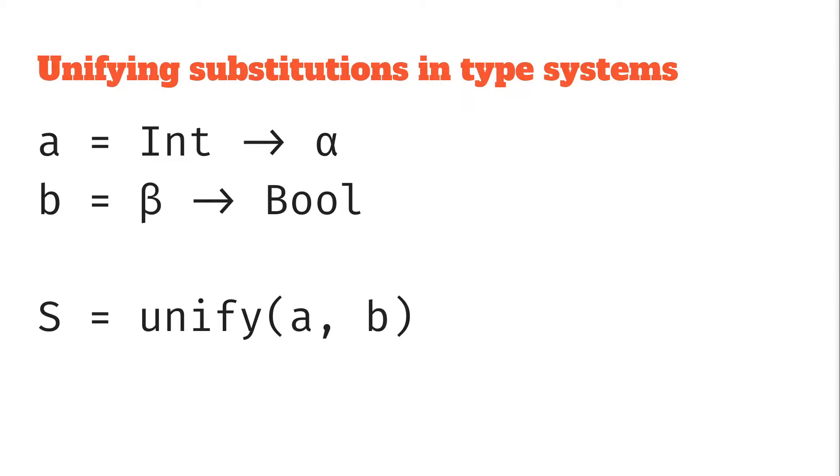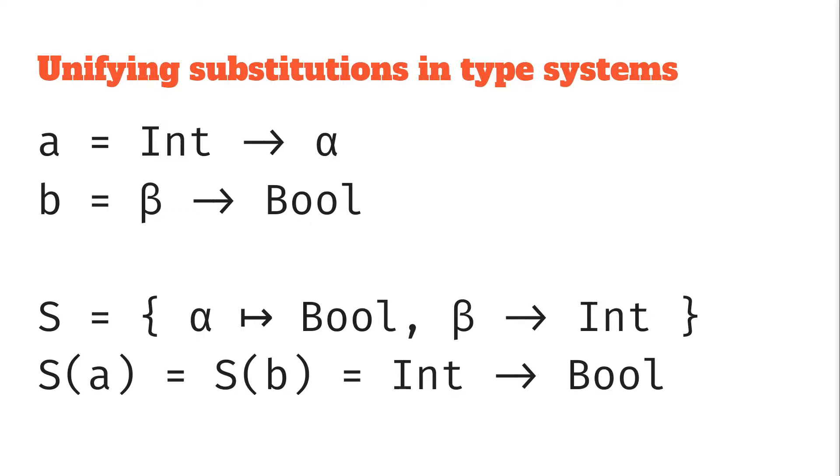And let's say you want to unify these two types. We can look at them by inspection and say, well, it looks like the Int and β have to match up, and the α and Bool have to match up, and that's exactly what we get. So we have the substitution which maps α to Bool and β to Int, and when we apply this substitution to both types we get Int → Bool, the same type for both.